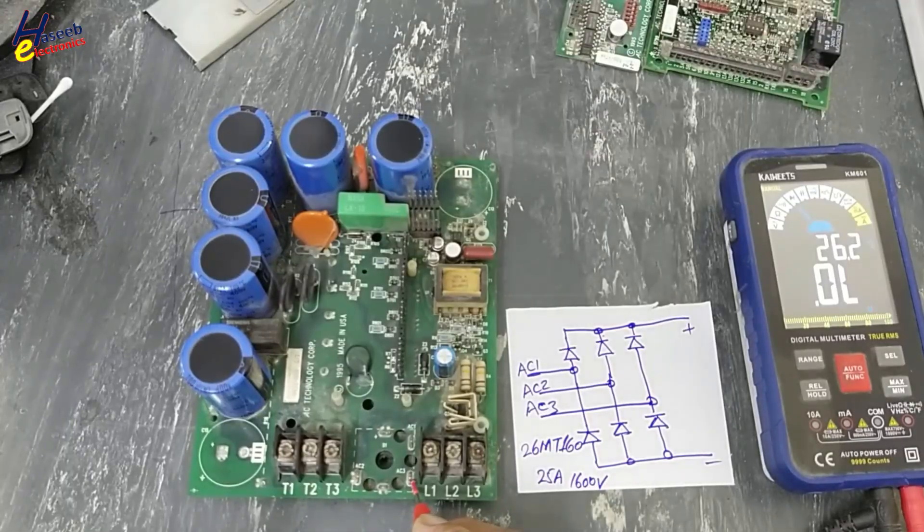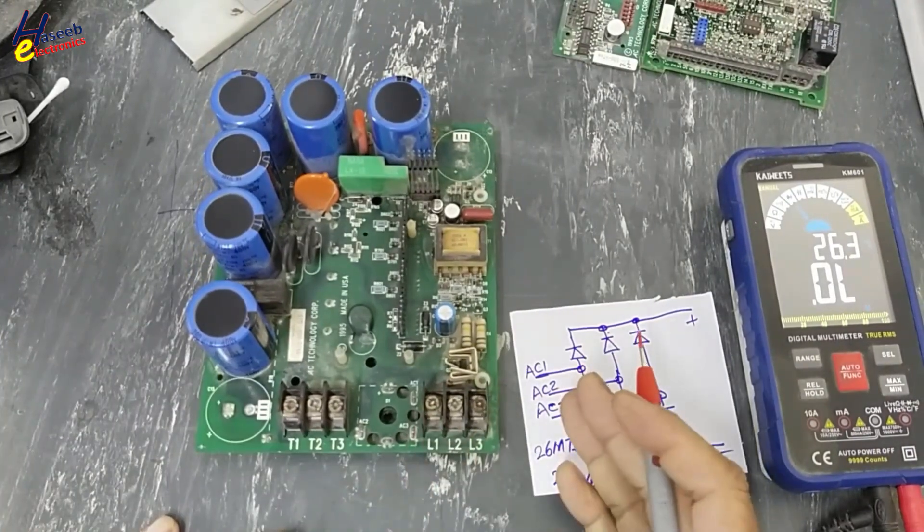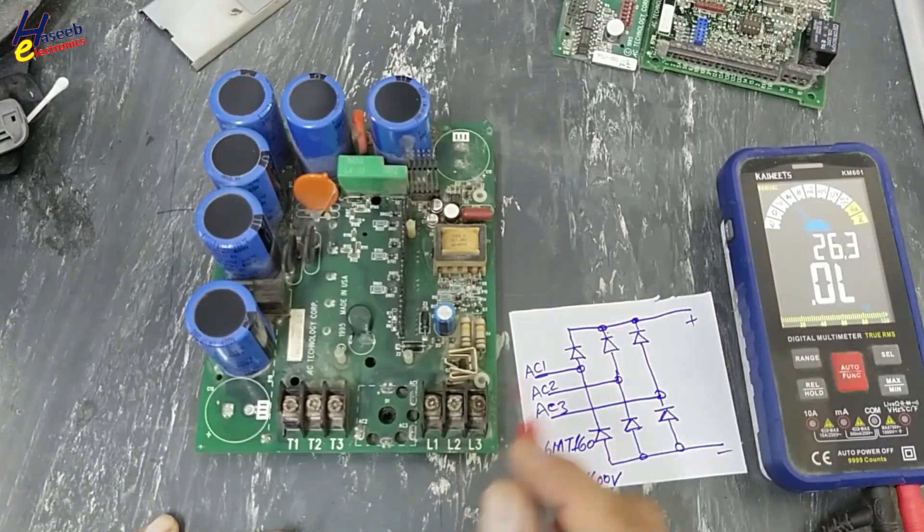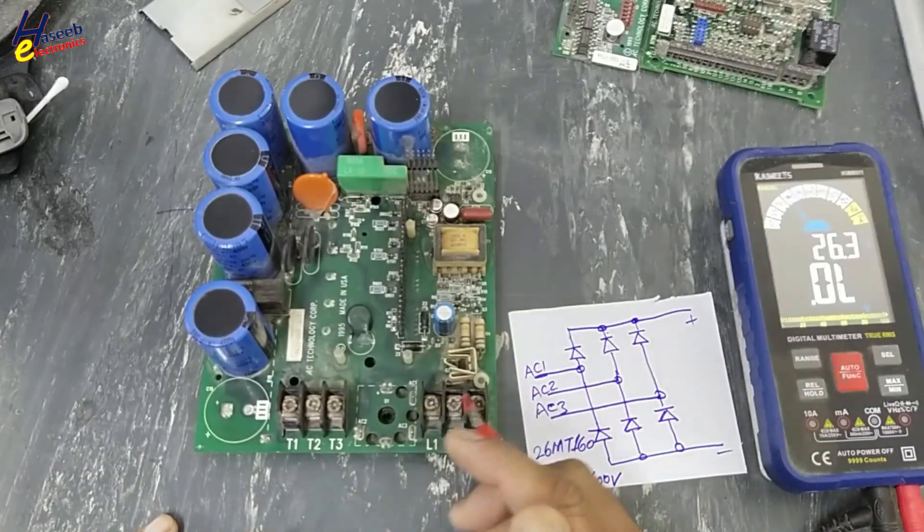380 volt, 400 volt, 440 volt, or 480 volt will be provided to this rectifier and it will provide rectified voltage to the capacitor bank.